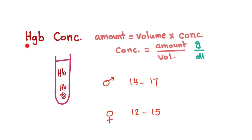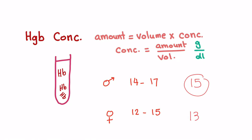Next, we have the hemoglobin concentration. In physics, concentration equals amount divided by volume, so it's measured in grams per deciliter. In males, the hemoglobin concentration is 14 to 17 g/dL. In females, 12 to 15 g/dL. You can remember males as an average of 15 and females an average of 13.